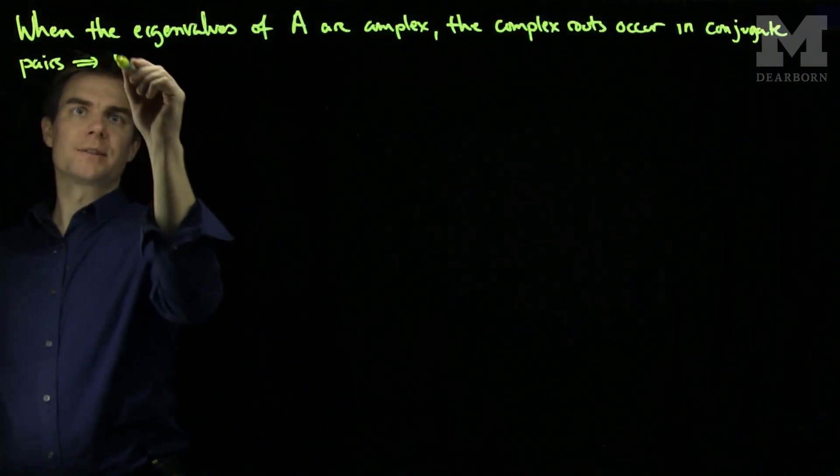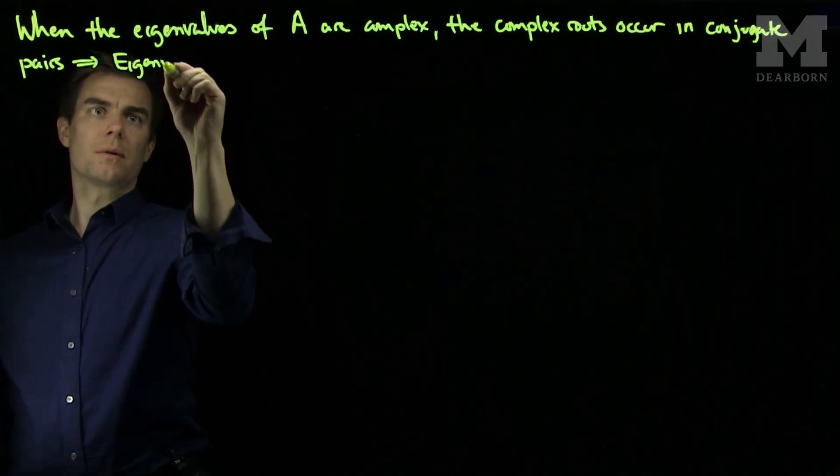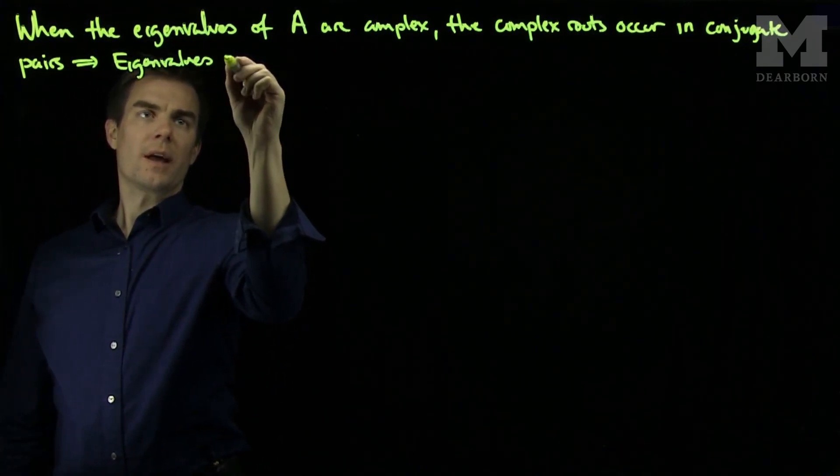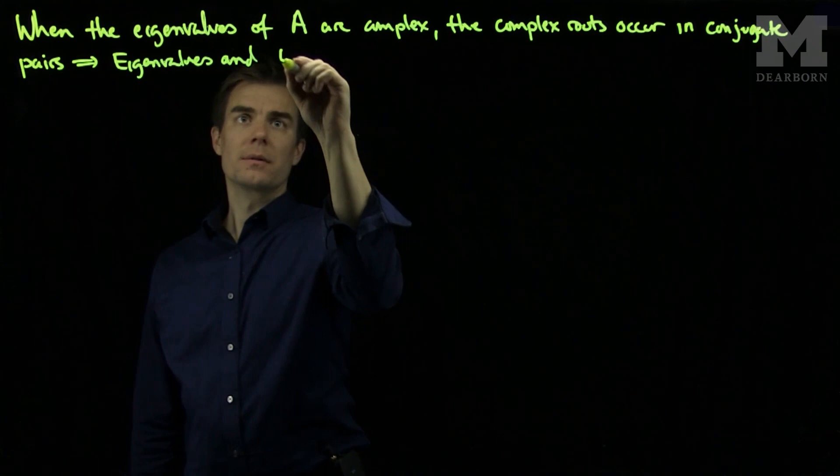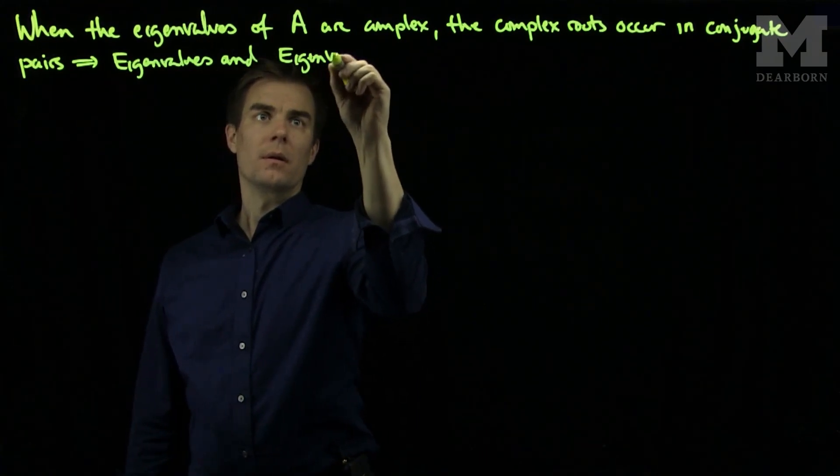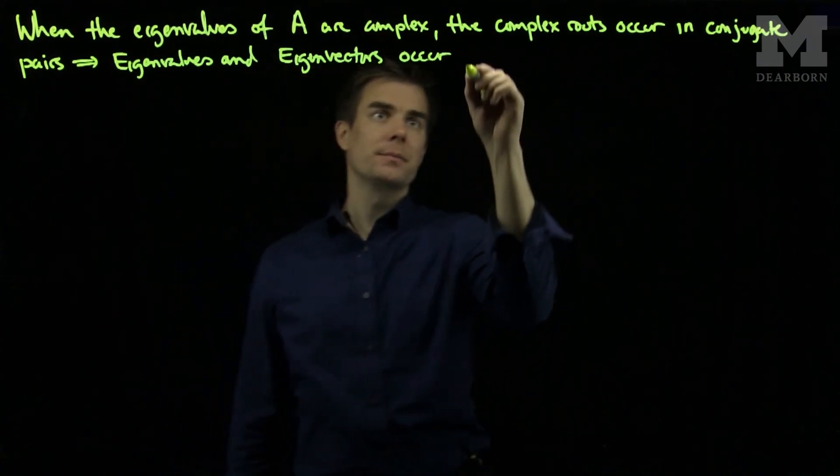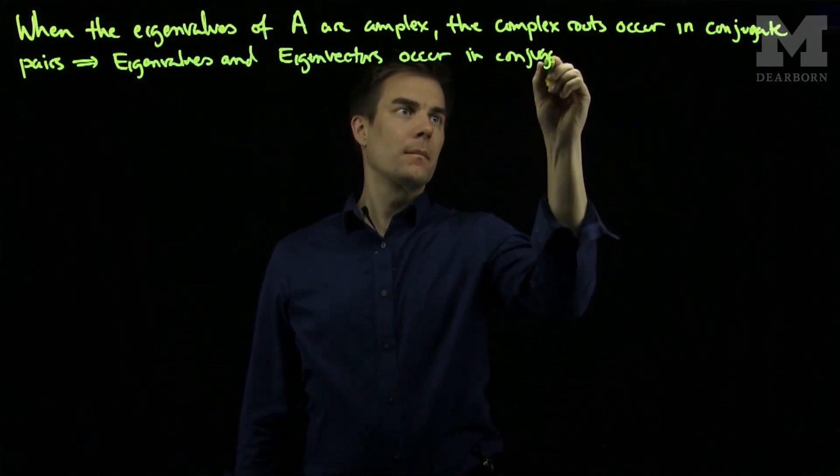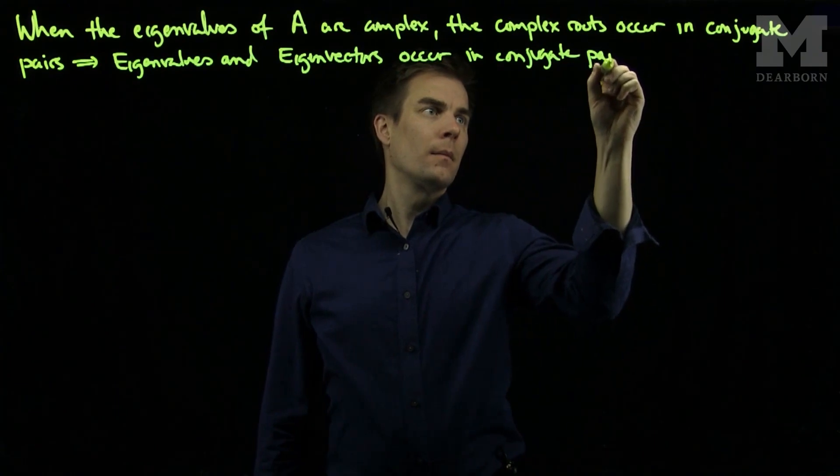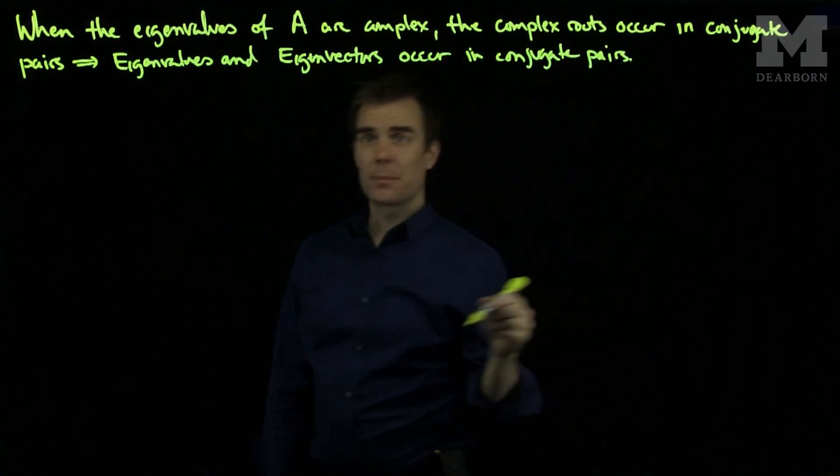This implies that the eigenvalues and eigenvectors occur in conjugate pairs. Let's see an example of this.